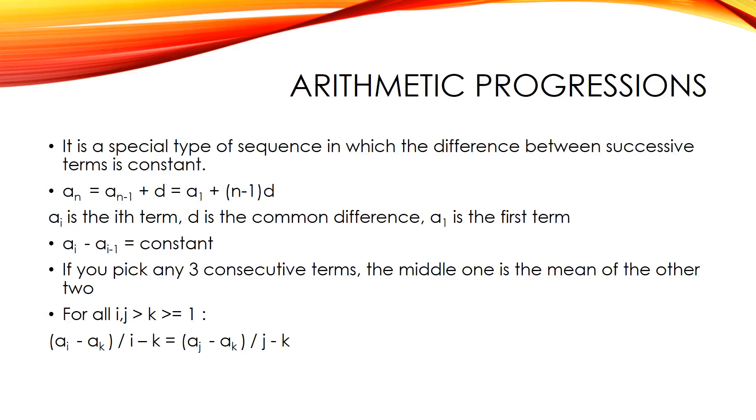Each of the following is necessary and sufficient for a sequence to be in AP. So ai minus ai-1 is equal to constant. If you pick any three consecutive terms, the middle one is the mean of the other two. For all i, j, k greater than or equal to 1, ai minus ak by i minus k equals aj minus ak by j minus k.